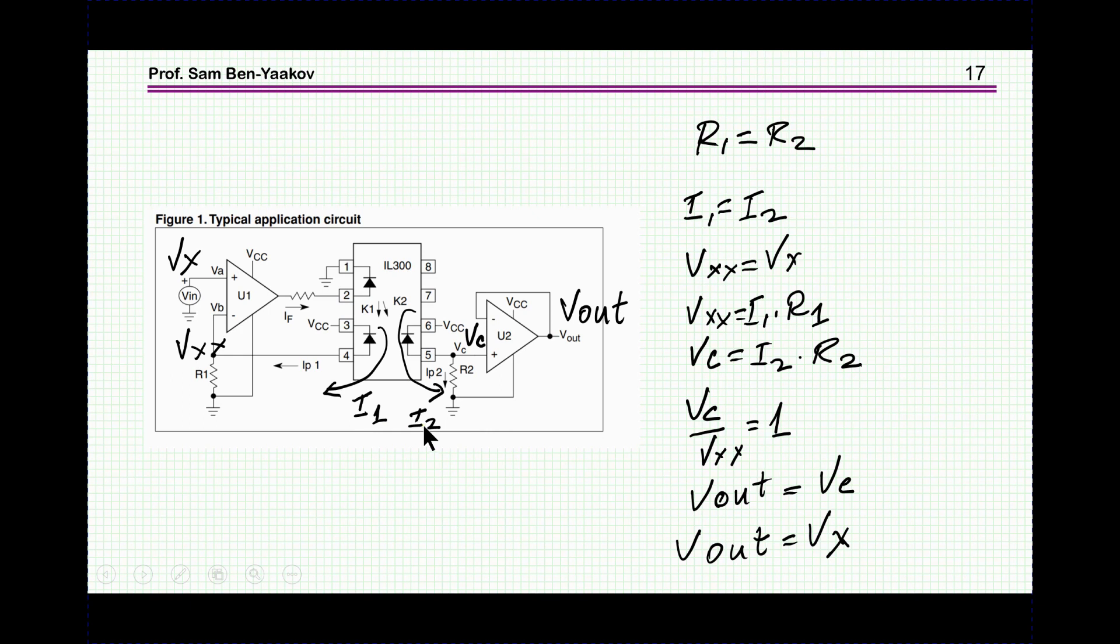So Vxx is equal to Vx because of the feedback here through the light. And then since the two diodes are exposed to the same light, then I1 is equal to I2 or within a constant. Then therefore, if R1 is equal to R2, Vc will be equal to Vxx.